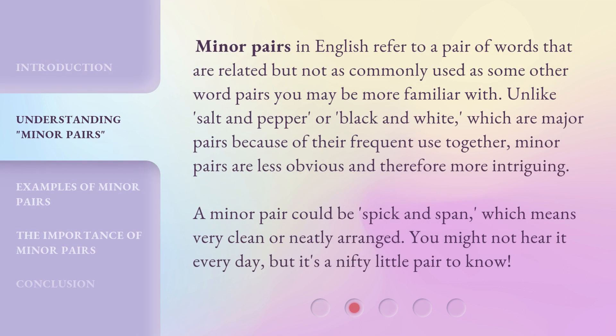Minor pairs in English refer to a pair of words that are related but not as commonly used as some other word pairs you may be more familiar with. Unlike salt and pepper or black and white, which are major pairs because of their frequent use together, minor pairs are less obvious and therefore more intriguing.